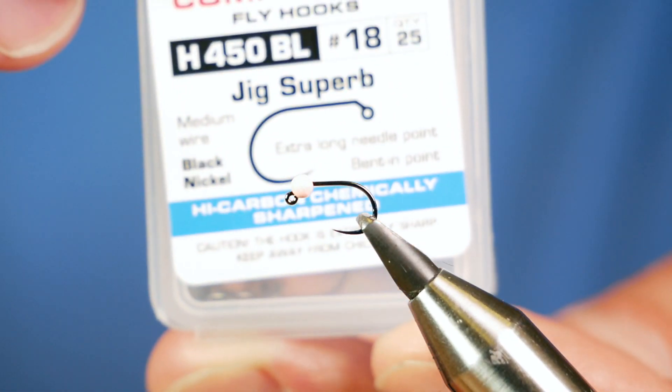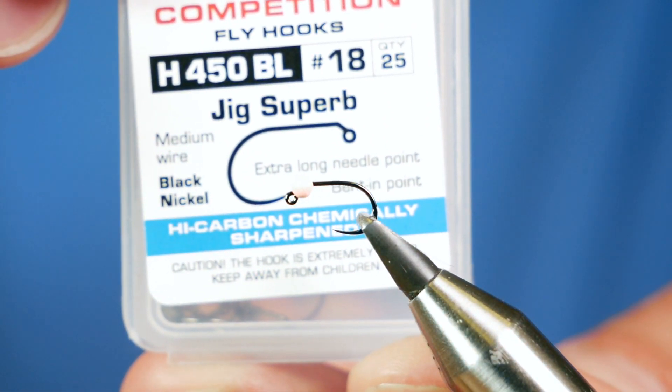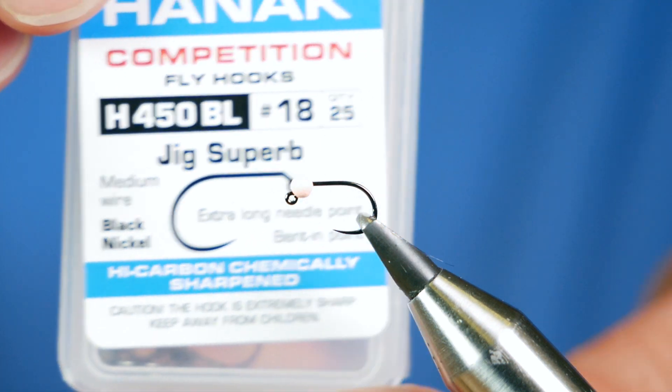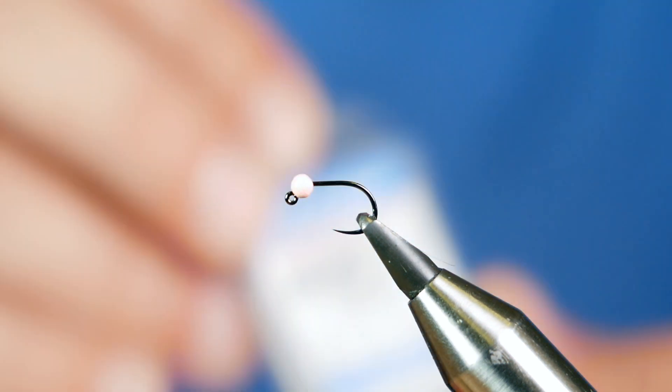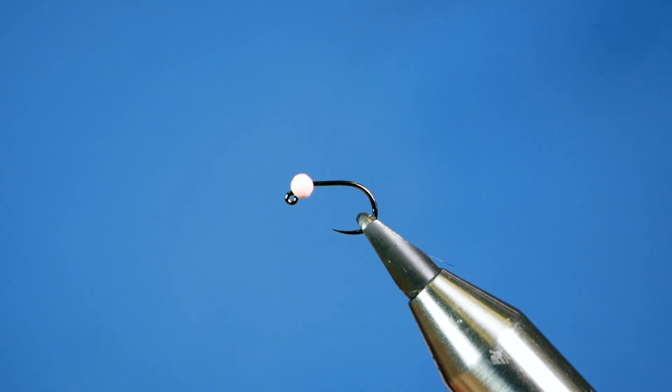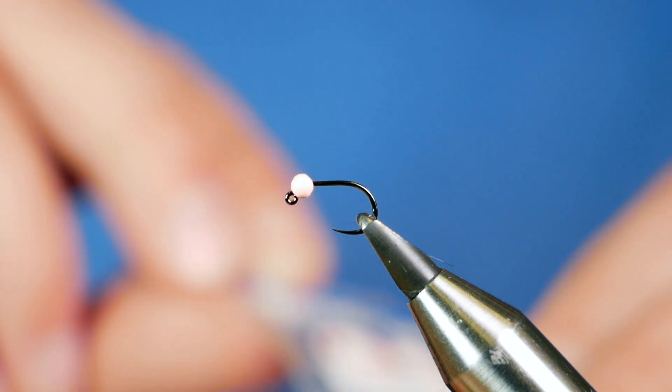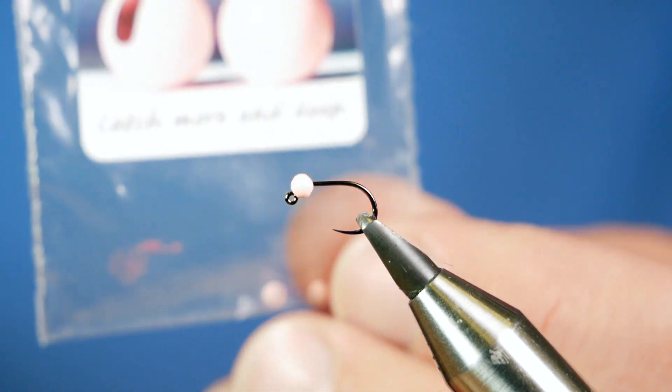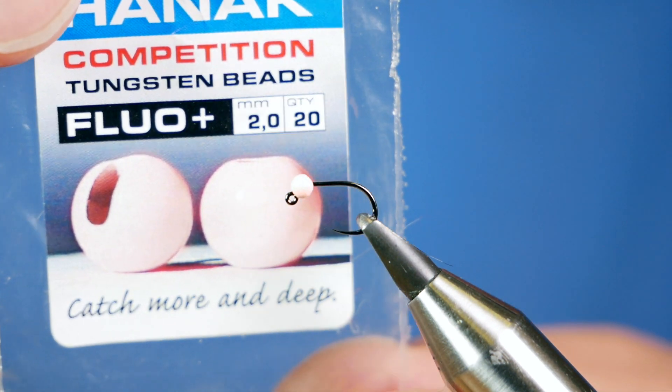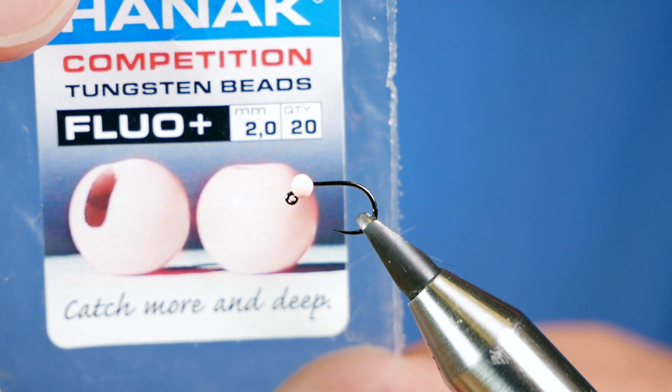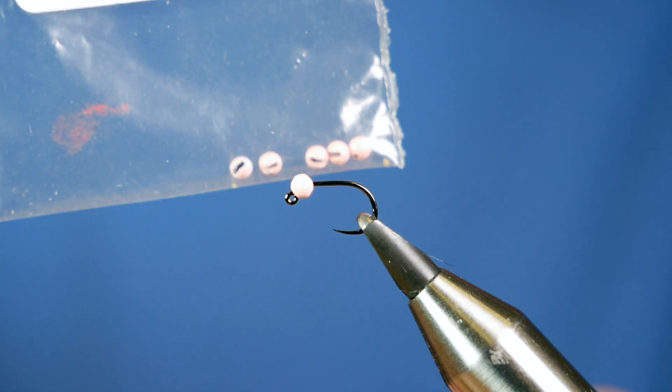In the vise then is a Hanak H 450 barbless hook. This is the Jig Superb and it's at size 18. This is the smallest the Jig Superb goes to. And I've coupled that with a Hanak flue bead. It's 2mm and it's a slotted tungsten bead. And as you can see, it's a powder pink.